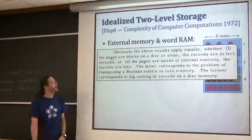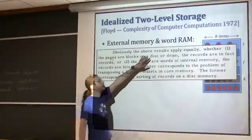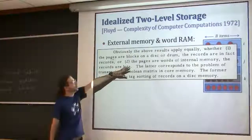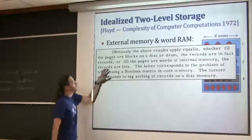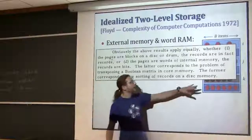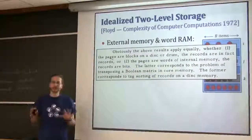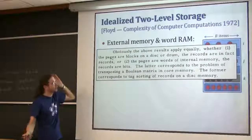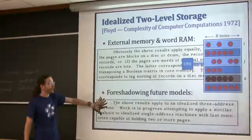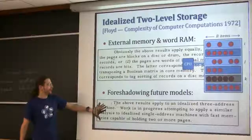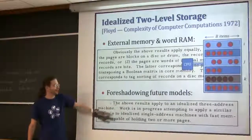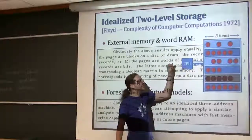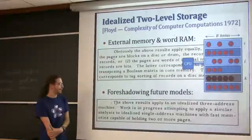Some other fun quotes from this paper are foreshadowing different things. One is the word RAM model, which is very common today but not at the time. It says obviously these results apply for discs and drums, but also when the pages - the blocks - are words of internal memory and the records are the bits in those words. So this is a word RAM model. It also foreshadows what we call the IO model - it says work is in progress attempting to study the case where you can store more than two pages, meaning a bigger cache.